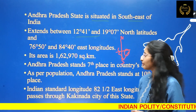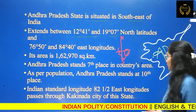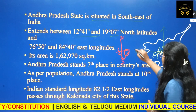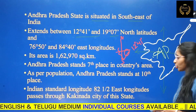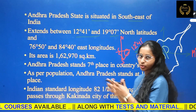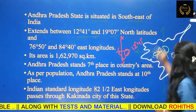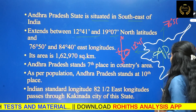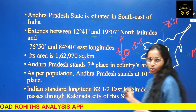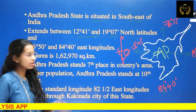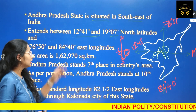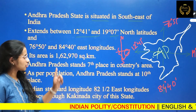Andhra Pradesh extends between 12 degrees 41 minutes and 19 degrees 7 minutes north latitude. Observe the latitudes: 12°41' N and 19°7' N. For longitudes, Andhra Pradesh is located between 76 degrees 51 minutes and 84 degrees 40 minutes eastern longitude.